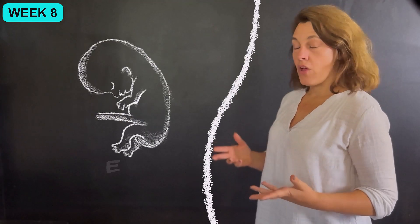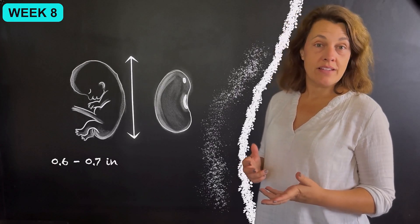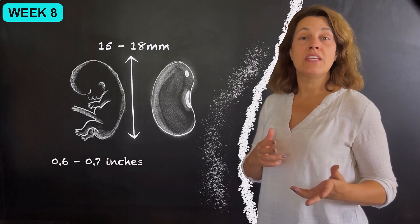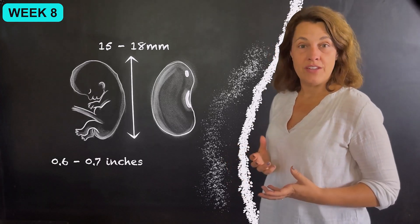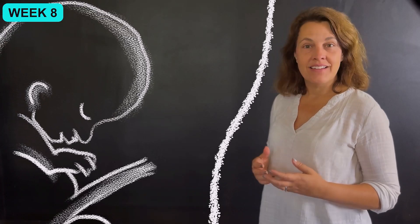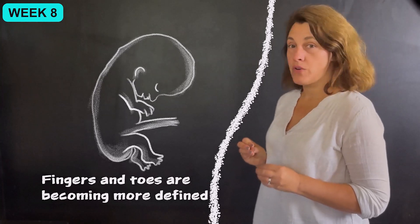The baby, which is called an embryo at this point, is about the size of a kidney bean, measuring 0.6 to 0.7 inches or 15 to 18 millimeters in length. At this point, the facial features have developed to a point that they're looking more human. Hands and feet are developing this week and the fingers and toes are becoming more defined.